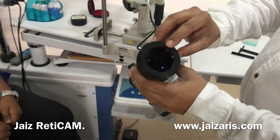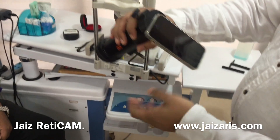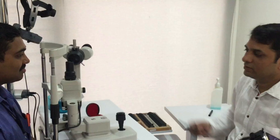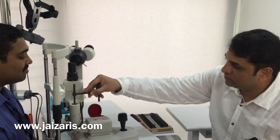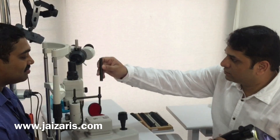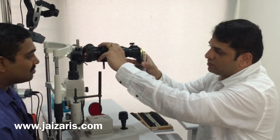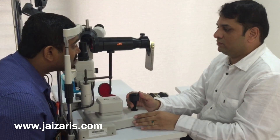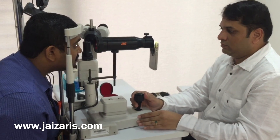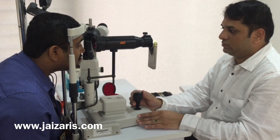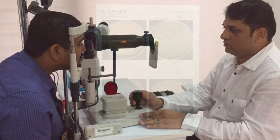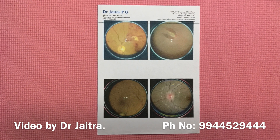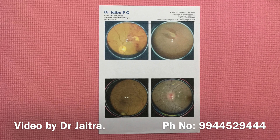The Jace Reticam is an adapter where the 20-diopter lens is placed on one side and the smartphone on the other. It can be used handheld for imaging the retina, but is basically designed to mount on a slit lamp for better, easier, and more stable retinal imaging. All images and videos used in this presentation are captured using the Jace Reticam with Moto G2 or iPhone 5S.